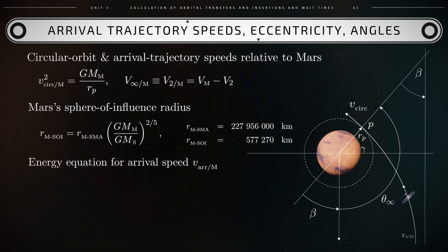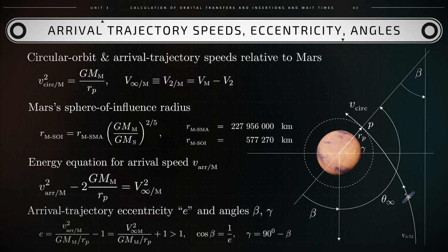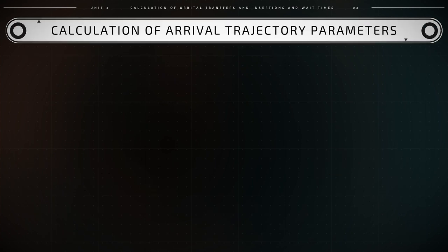The arrival speed v_rm of the spacecraft at the desired circular orbit is connected to v_infinity_m through the energy equation: v_rm squared minus 2·gm_m over rp equals v_infinity_m squared. The eccentricity e is then obtained as e equals v_arrival_m squared over (gm_m over rp) minus 1. Hence, cosine of beta equals 1 over e, and gamma equals 90 degrees minus beta.